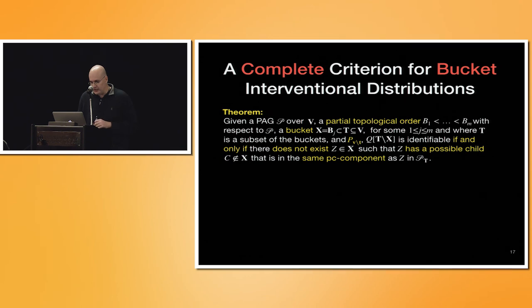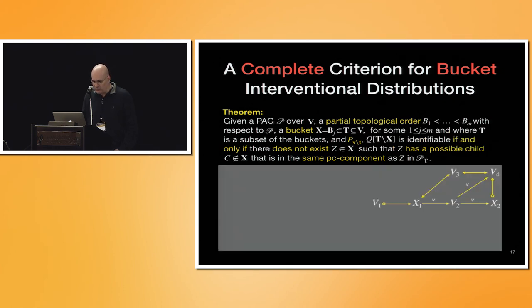Now we can revisit the identification in PAGs. And we will do bucket intervention, the intervention of the buckets and the other guys. I will not read the whole thing. Most important here that we use the partial top PTO, the partial topological order. Suppose that you have a bucket Bj that I call X. Then we would like to talk, I'm in the middle of the statement, that you got the effect QT minus X. The effect of X in T is identifiable if and only if there doesn't exist some node in the bucket Z in X, such that Z has a possible child that is in the same PC component. For example, here, if you want to get the effect of X1 in V, V is all other guys, it is identifiable. You see that the only possible child is V2. And it's not in the same PC component because there is even a V arrow here.